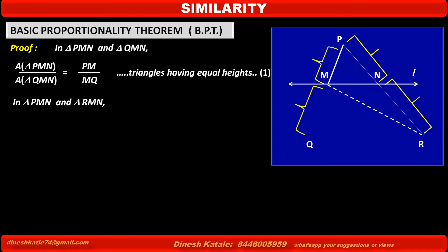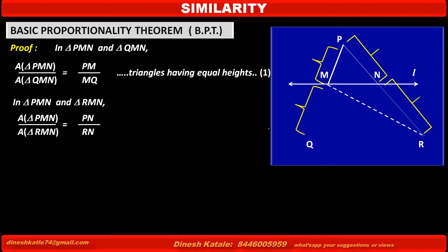Similarly, in triangle PMN and triangle RMN, by taking bases PN and NR on the same line for these two triangles, they have a common height from vertex M. So, area of triangle PMN upon area of triangle RMN is equal to the ratio of their bases, PN upon NR. With the same reason: triangles having equal heights. This is Statement 2.